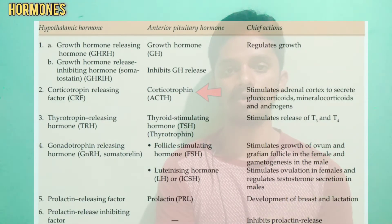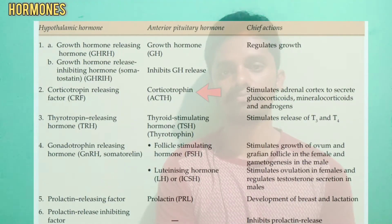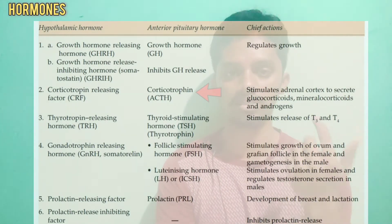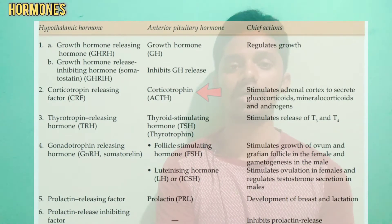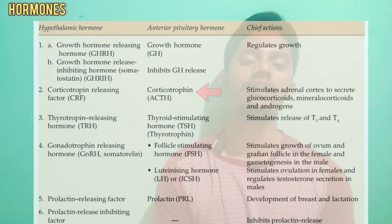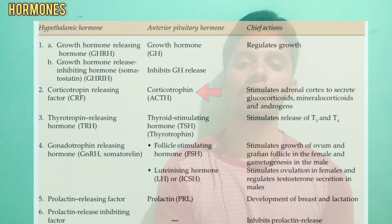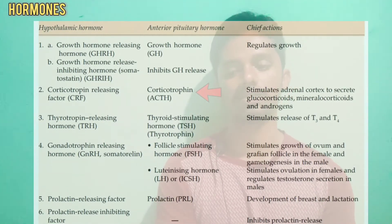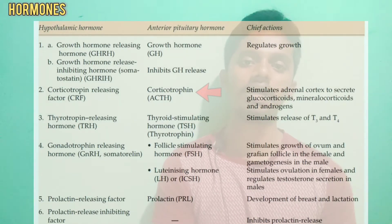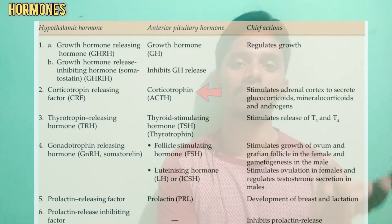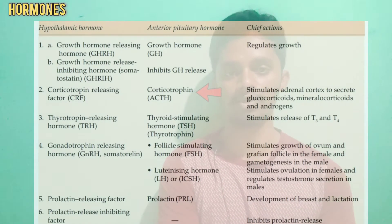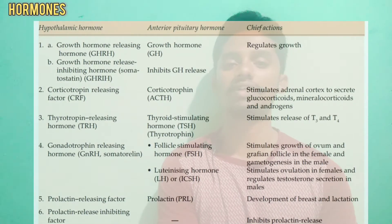The hormone that controls corticotropin is Corticotropin Releasing Factor, or CRF, produced by the hypothalamus. CRF stimulates the pituitary gland to release corticotropin. Corticotropin then stimulates the adrenal cortex to produce glucocorticoids, mineralocorticoids, and androgens.